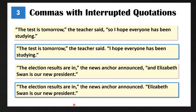Now let's look at the second example. 'The election results are in,' the news anchor announced. 'Elizabeth Swan is our new president.' We don't have a coordinating conjunction here, so we finish the speaker tag with a period, and then the second part of the quotation is in quotes. Note that we do have a comma after 'the election results are in' because the speaker tag is attached to this first quotation.